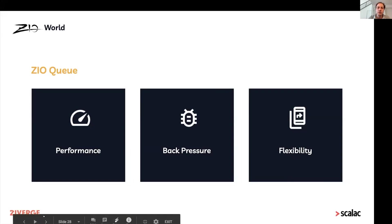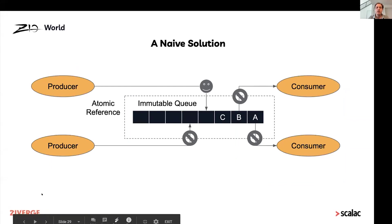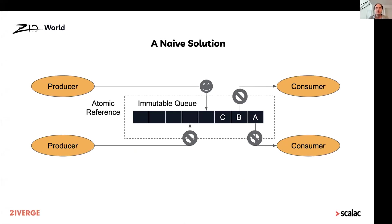Sometimes as a user it's easy to say a queue is a queue — ZIO has a queue, Cats Effect 3 has their own queue, a queue is a queue. But that's actually not really the case. If we think about what a naive solution to a queue would look like, we could just put an immutable Scala queue inside an atomic reference. And in fact, that's not even that naive — that is the queue implementation in Cats Effect 3. This is what I would call a concurrent data structure, kind of. It's concurrent in the sense that you can use it where multiple fibers are accessing it and it'll give you the right results, but it does that by essentially not being concurrent.